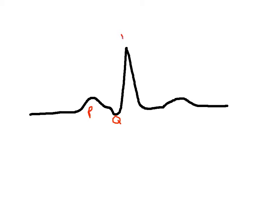So on the EKG we have P, Q, R, S, T. At P, you're getting atrial depolarization. The electrical signal occurs before the mechanical or physical representation, so depolarization is followed by contraction. Depolarization of the atria occurs at P, and then from P to Q is when you get atrial contraction. The Q-R-S complex represents ventricular depolarization, and then from S to T is ventricular contraction, and T is repolarization of the ventricles.